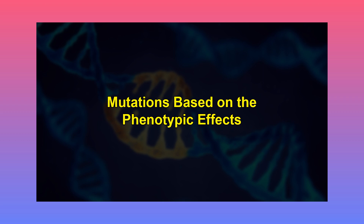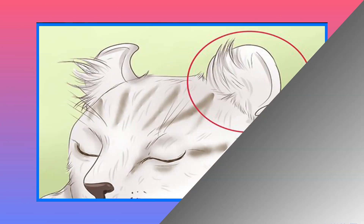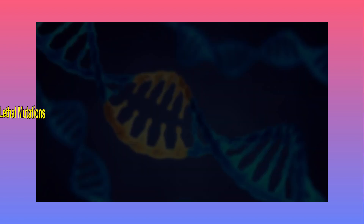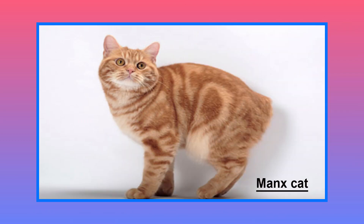Let's now understand mutations based on phenotypic effects. Morphological mutations are those that affect the outwardly visible properties of an organism — for example, curly ears in cats. The other type is lethal mutations. A mutation that causes death of an organism or affects the survival of an organism is called a lethal mutation. These mutations affect the viability or survival of the organisms — for example, the Manx cat.